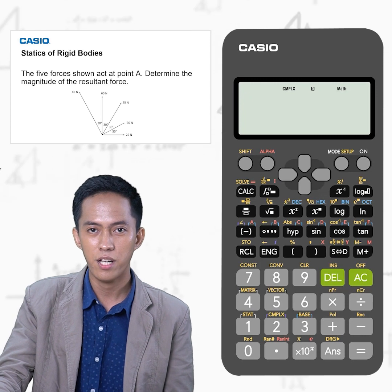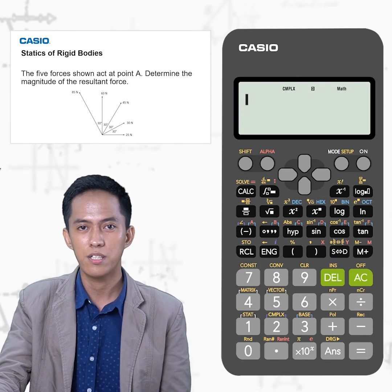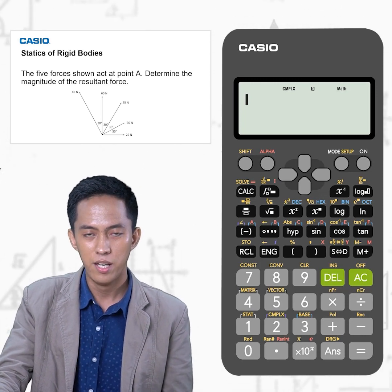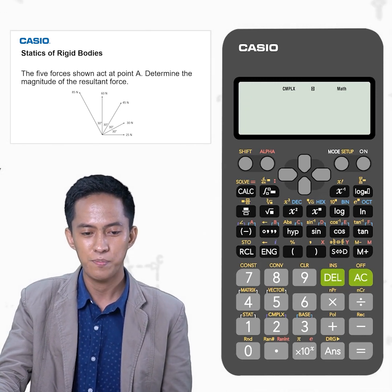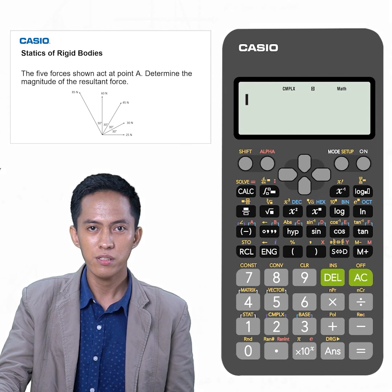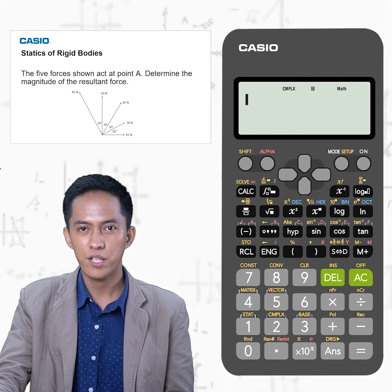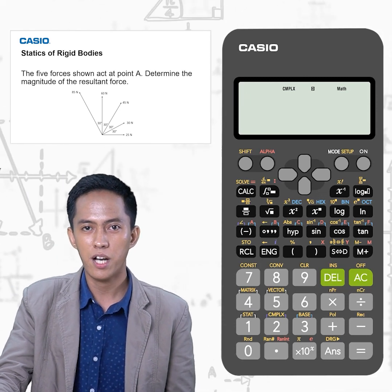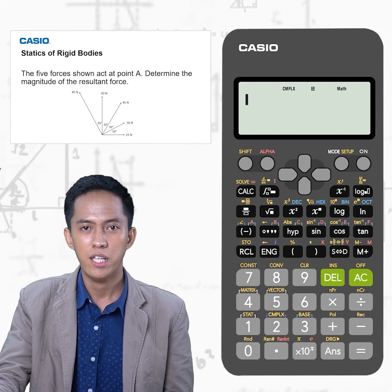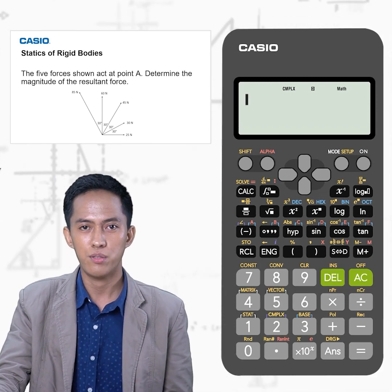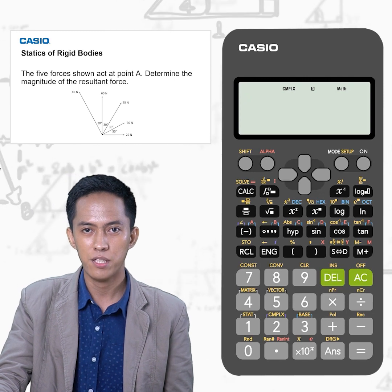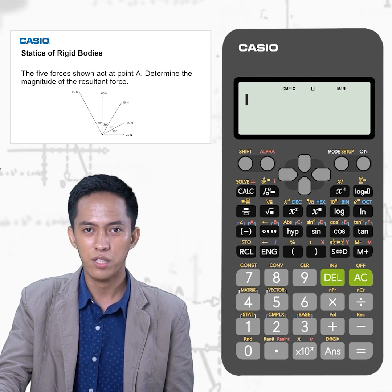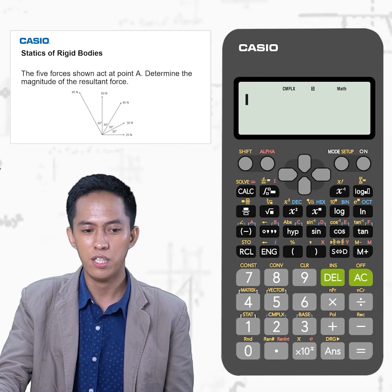After you press Mode 2 Complex, make sure that the calculator is in degrees mode. Press Shift, Mode, 03, which sets it to degrees.